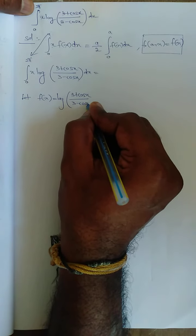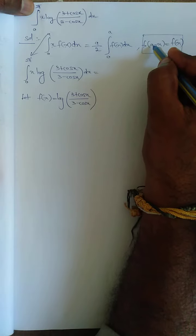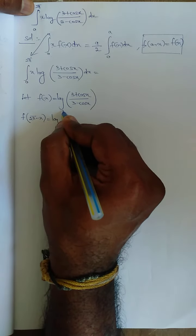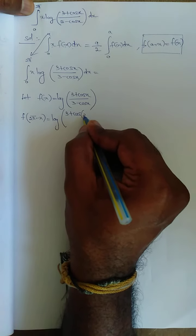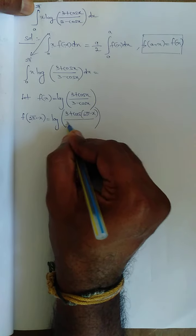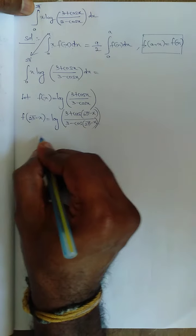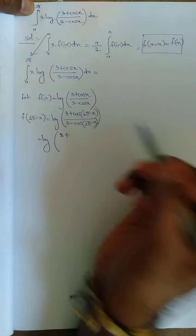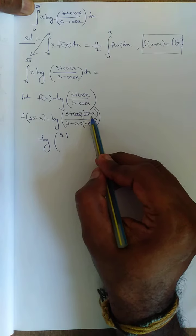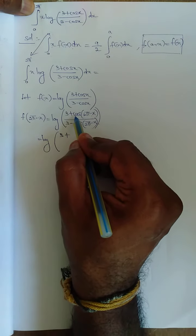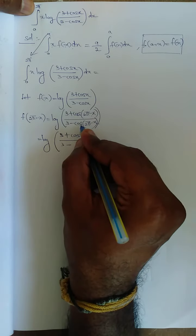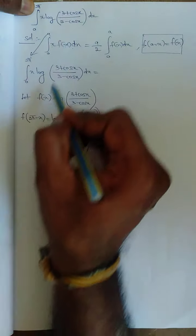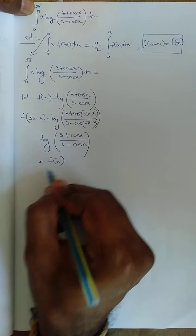So f(2π-x) = log[(3+cos(2π-x))/(3-cos(2π-x))]. Now cos(360°-θ) lies in the fourth quadrant where cosine is positive, so cos(2π-x) = cosx. Similarly, cos(2π-x) in the denominator also equals cosx. Therefore f(2π-x) = log[(3+cosx)/(3-cosx)].